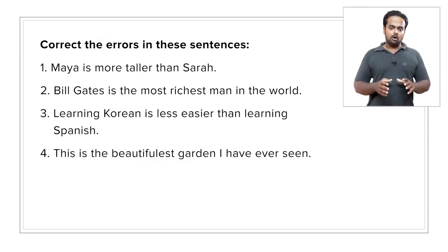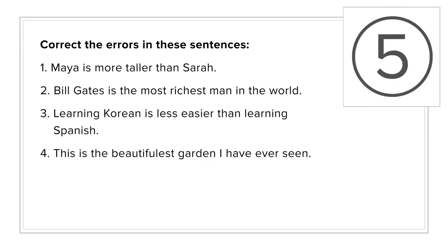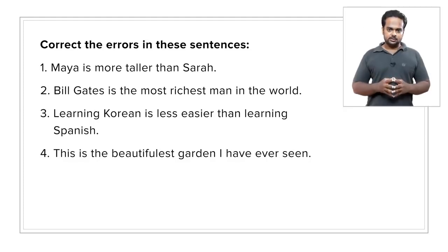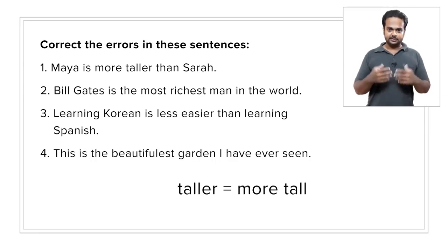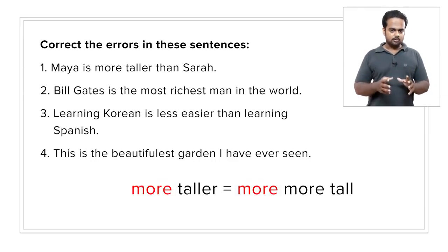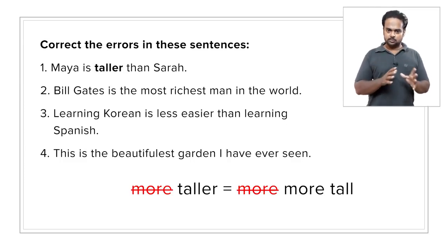With these in mind, here are a few example sentences — all of them have mistakes. In the first sentence, the error is that an ER form, 'taller,' is used along with 'more.' Remember that 'taller' means 'more tall,' so if you say 'more taller,' that's like saying 'more more tall,' which doesn't make sense. The correct way to say this is: Maya is taller than Sarah. Whenever you use an ER form, don't put 'more' before it.